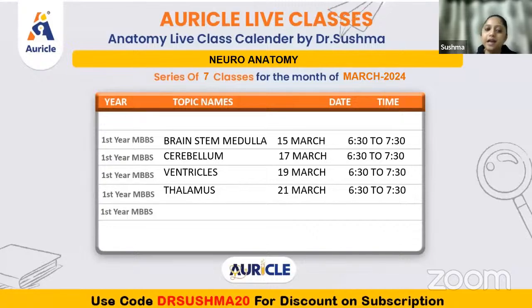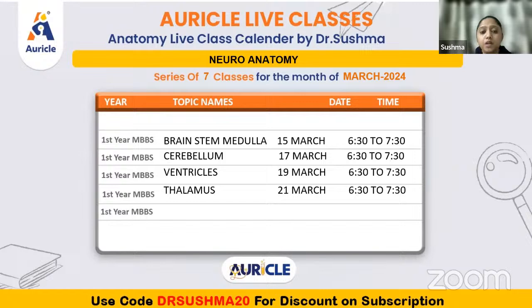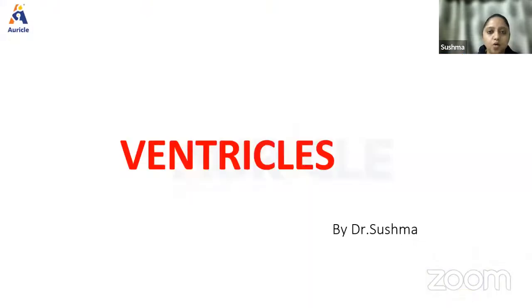This is a tentative schedule we have. By the 21st, we are finishing most of the important topics of neuroanatomy. Later, we'll do cranial nerves and then cadaveric image discussion in subsequent classes. Let's take today's topic: ventricles.